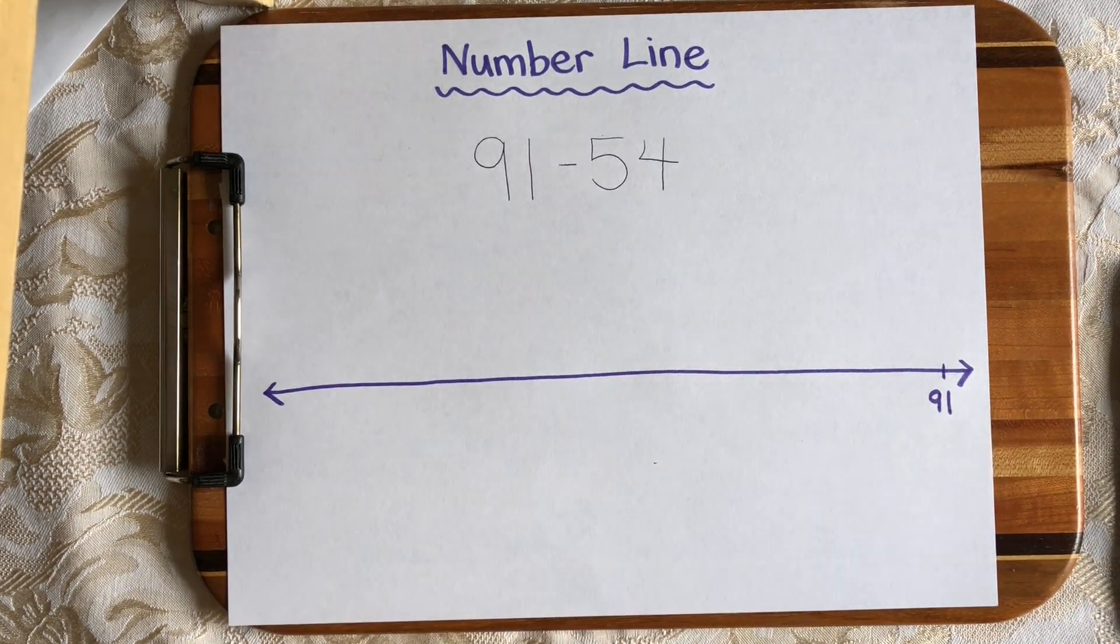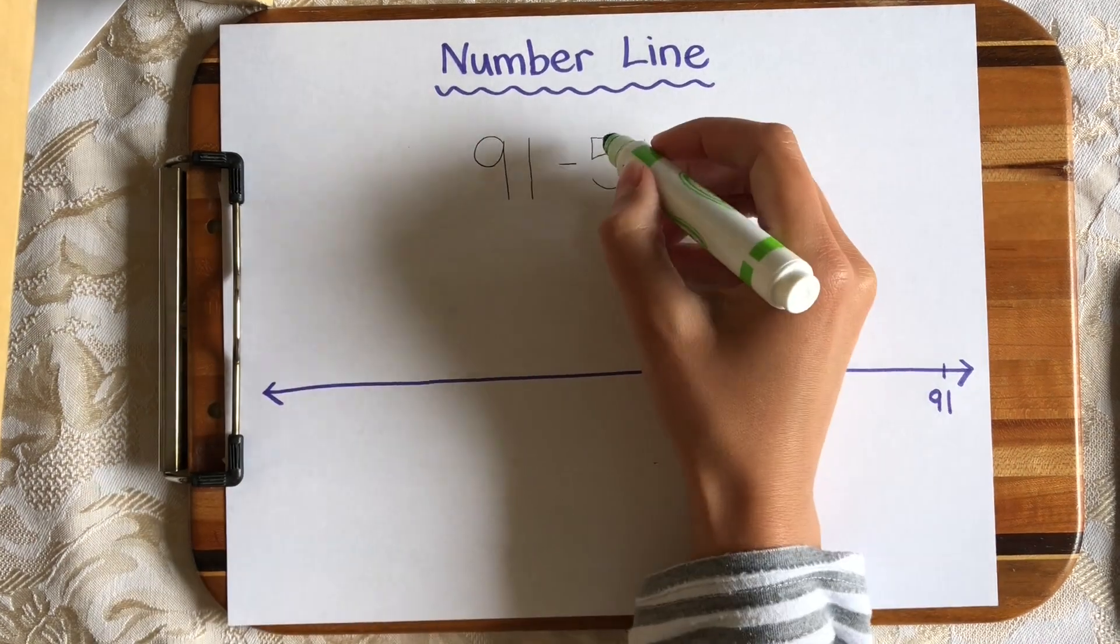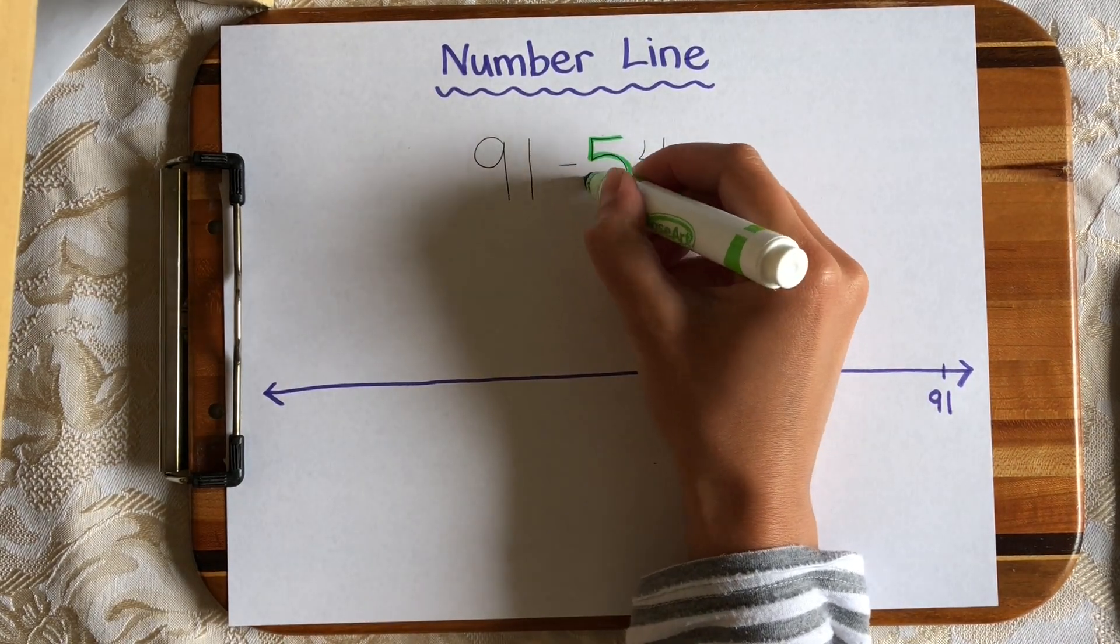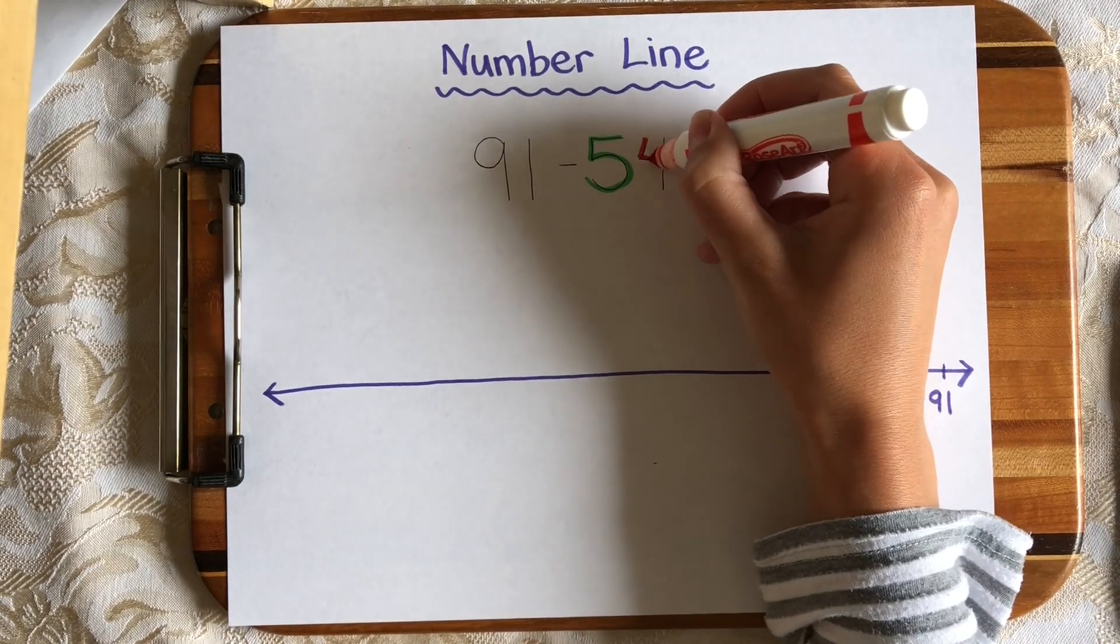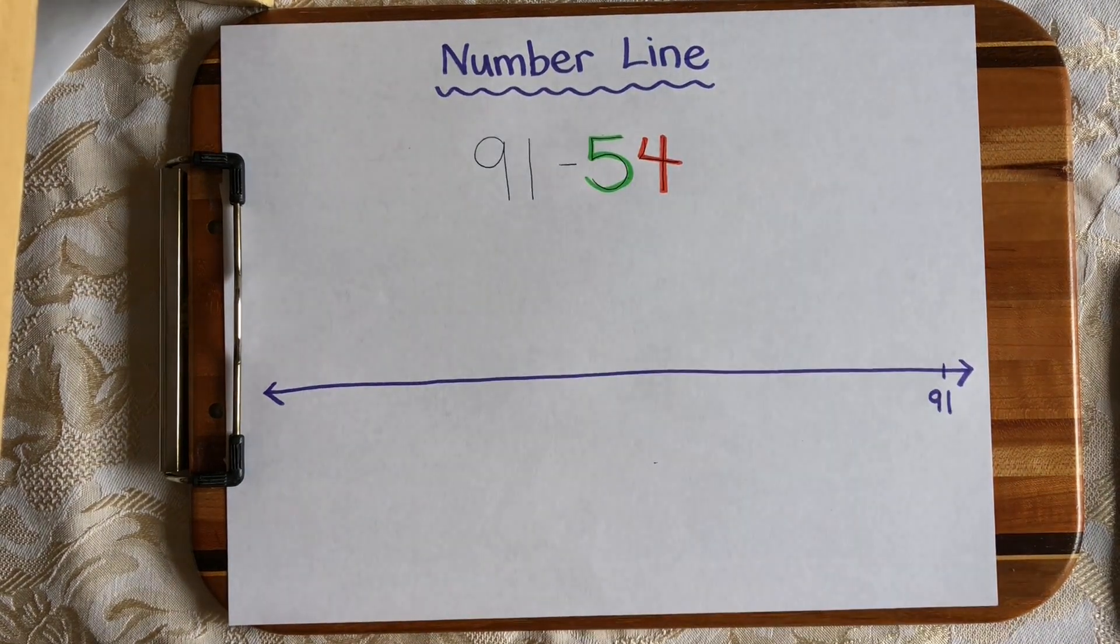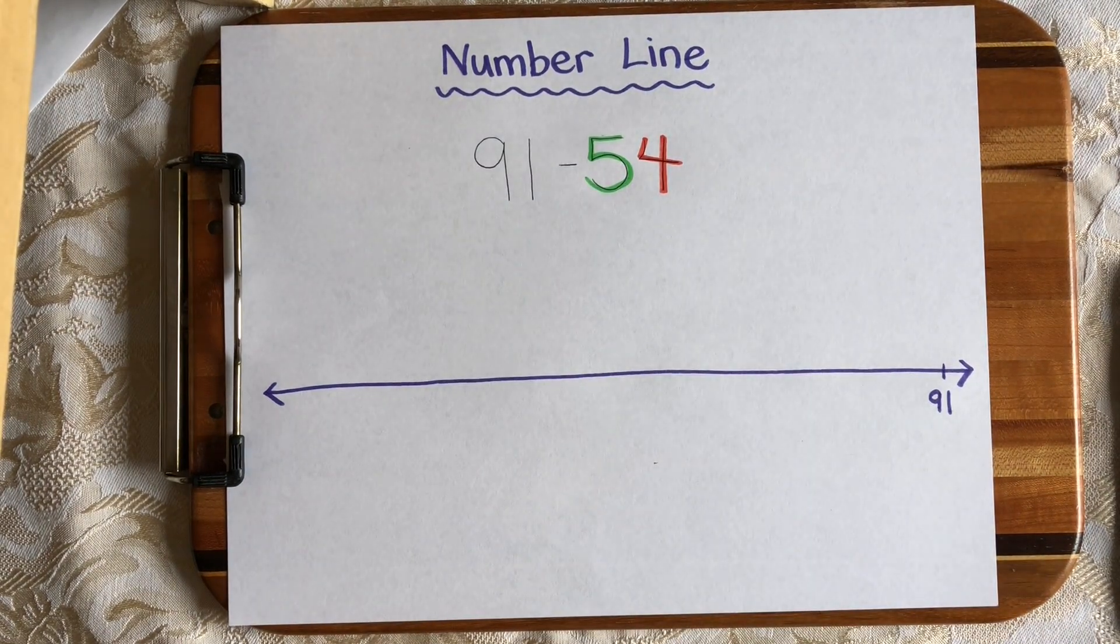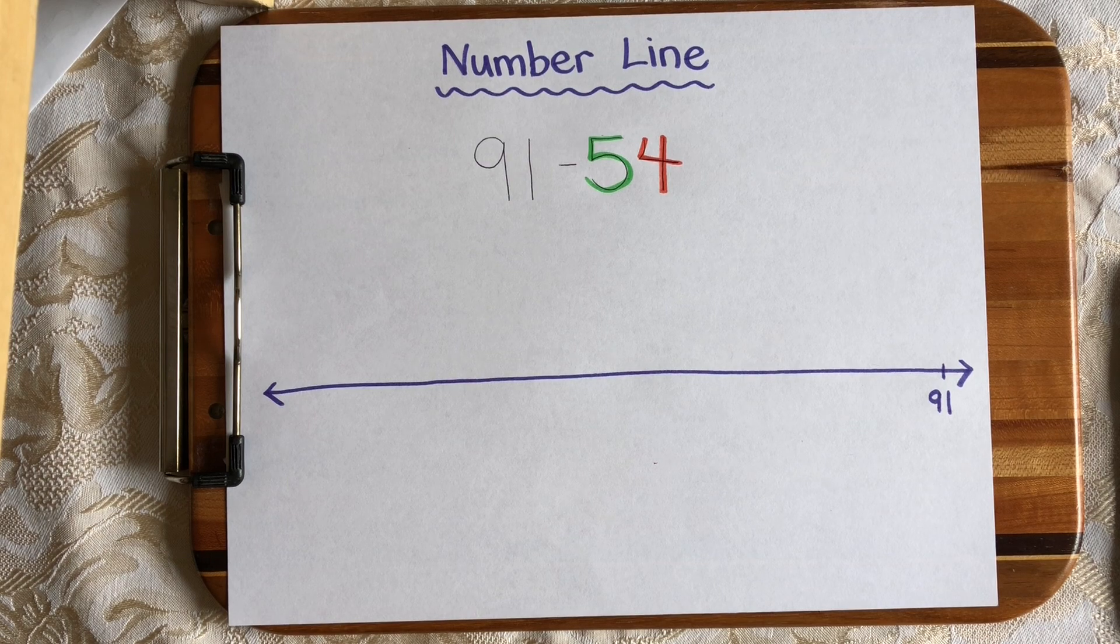Now I'm going to look at 54 and see what I have to subtract. 54 is 5 tens and 4 ones. So I'm going to be making 5 hops of 10 and 4 hops of 1. So let's start with the tens.